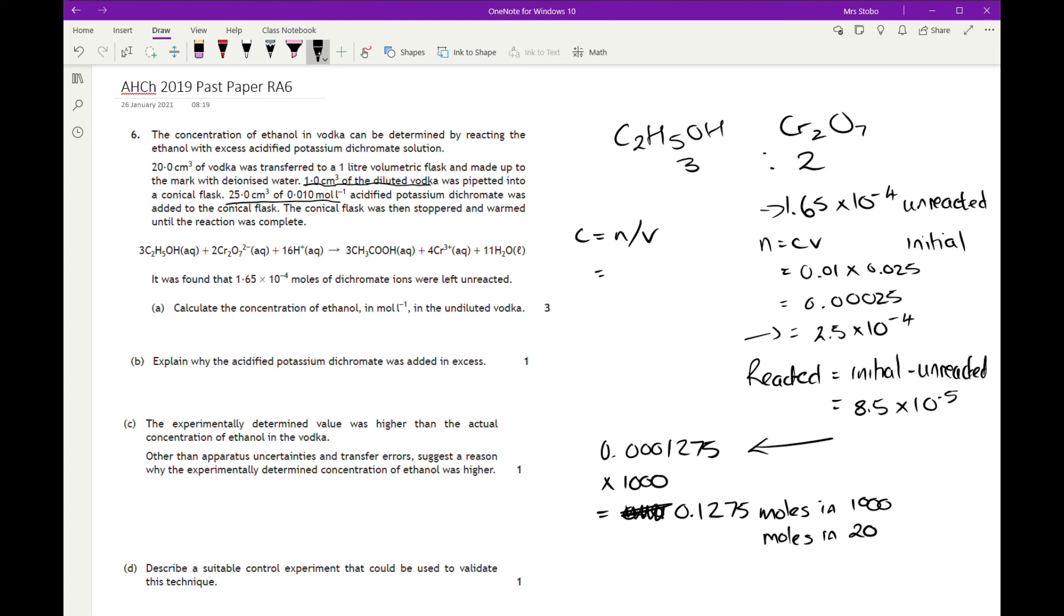So that's 0.1275 divided by 0.02, which equals 6.375. In the mark scheme, they have 6.4 moles per liter.